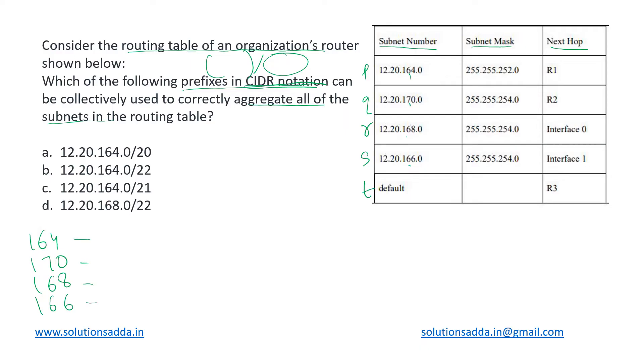We'll be converting 164 to binary: 128, 64, 32, 16, 8, 4, 2, and 1. For 170 it will be 10101010. For 168 it's 10101000, and 166 is 10100110.